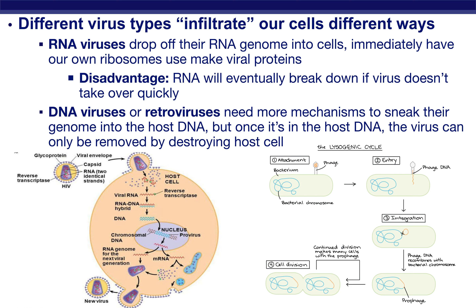Different types of viruses infiltrate our cells in different ways. RNA viruses can immediately dump their RNA genome into your cells and start making viral proteins, but there is a disadvantage: RNA is extremely fragile. Sometimes that RNA breaks down before the virus can really start taking over the cell. That's why you hear about viral dosages or viral exposure — it takes quite a few COVID-19 viruses, since COVID-19 is a typical RNA virus, for you to actually get COVID. Very short exposures and small doses don't necessarily mean you'll get infected, but large doses or long exposures greatly increase your risk.